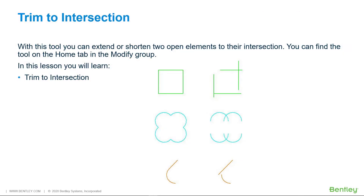With this tool, you can extend or shorten two open elements to their intersection. You can find the tool on the Home tab in the Modify group. In this lesson, you will learn about the Trim to Intersection tool.